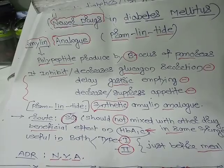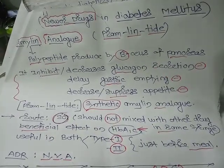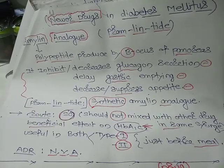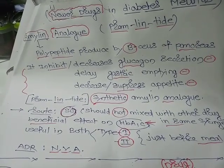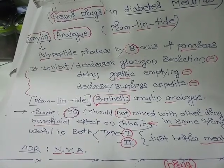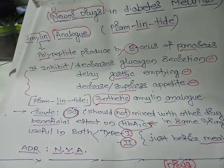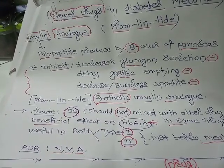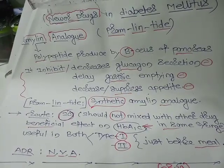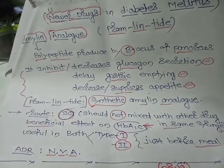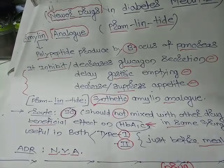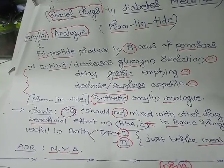Pramlintide should not be mixed with any other drug in the same syringe, as this may lead to loss of efficacy. It has a beneficial effect on HbA1c and is useful in both Type 1 and Type 2 diabetes mellitus. It is given just before the meal. Adverse drug reactions include nausea, vomiting, and abdominal pain.